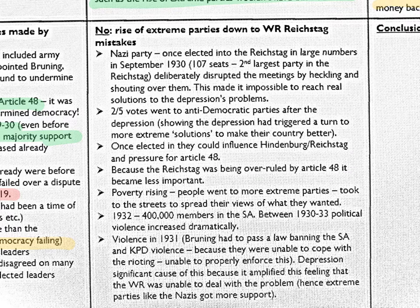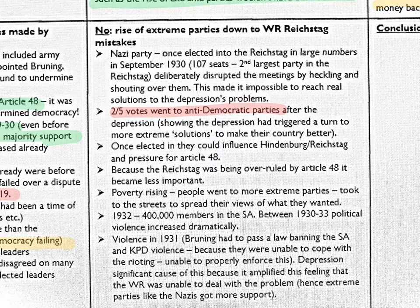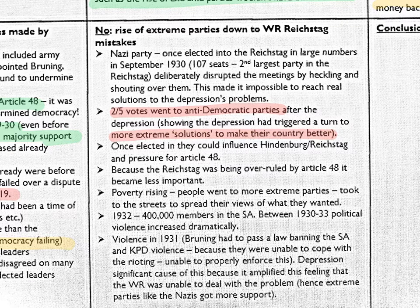I would also argue that the collapse of the moderate coalitions wasn't entirely outside of Germany's control. Yes, the economic depression triggered a rise in support for more extreme parties, but this was partly due to the moderate parties not working together efficiently to deal with the problems that existed as a result of the depression. Two out of five votes went to anti-democratic parties after the depression — partly caused by the depression, but it also reflected that people felt the moderate parties weren't actually dealing with the problems at hand, and that only more extreme solutions could make their country better.